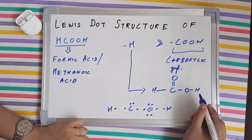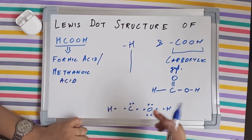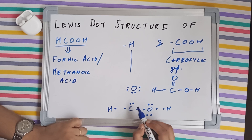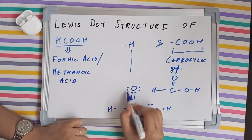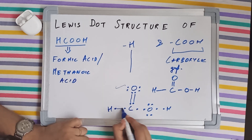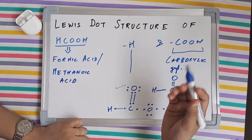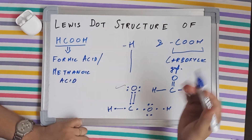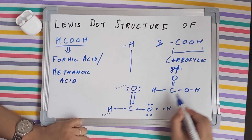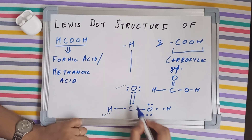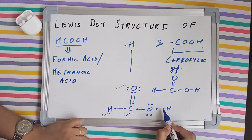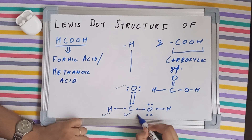Now counting valence electrons: hydrogen has one valence electron. Carbon has four. Each oxygen has six valence electrons — one two three four five six. After bond formation, let's count for the oxygen with the double bond: one two three four five six seven eight — it has completed its octet. The hydrogen attached to carbon also completes its duplet with two electrons.